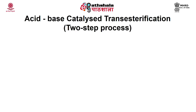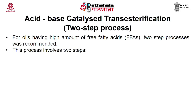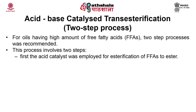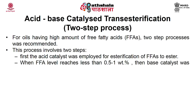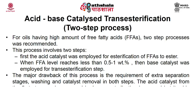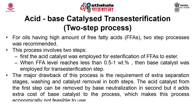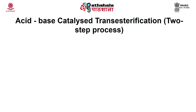The mechanism of acid catalyzed transesterification involves three steps: (1) protonation of the carbonyl group resulting in carbocation formation; (2) nucleophilic attack of alcohol to produce a tetrahedral intermediate; (3) rearrangement of the tetrahedral intermediate to release an alkyl ester and the proton catalyst. A two-step process — acid catalyzed followed by base catalyzed transesterification — is recommended for oils with high free fatty acid content. First, acid catalyzed esterification converts the FFA to ester until the FFA level reaches less than 0.5 to 1% by weight, then base catalyst is employed for transesterification.